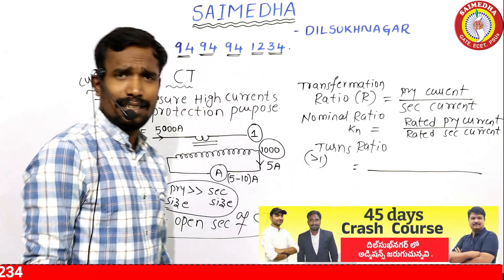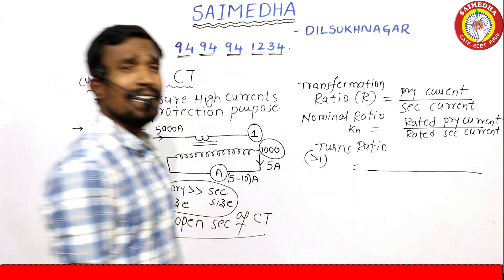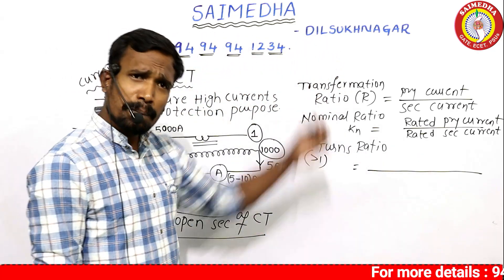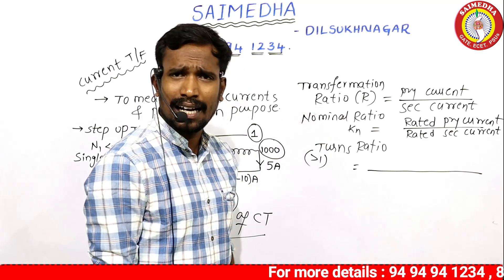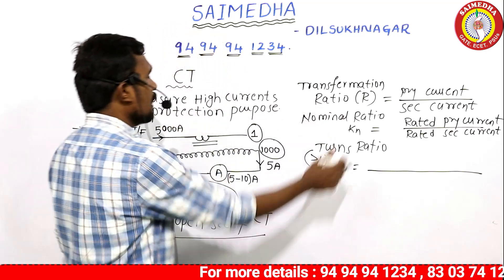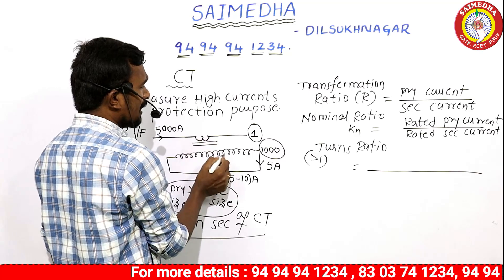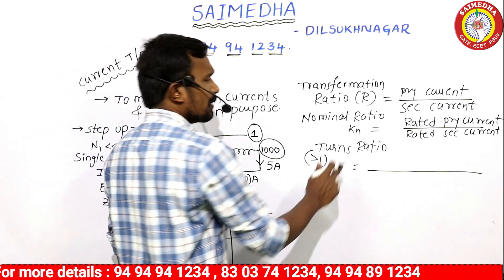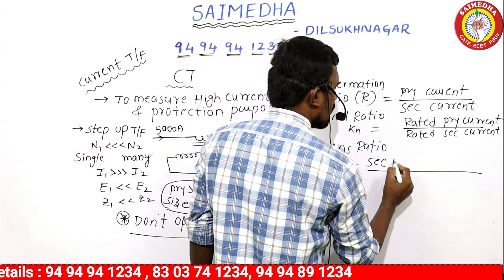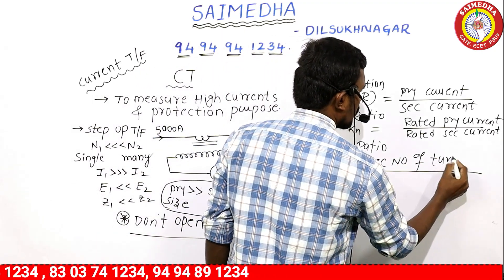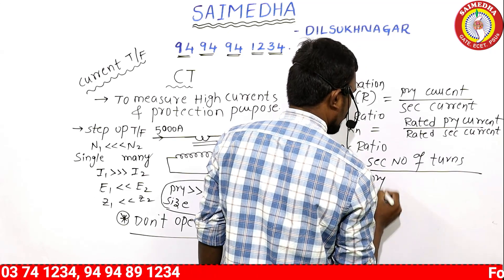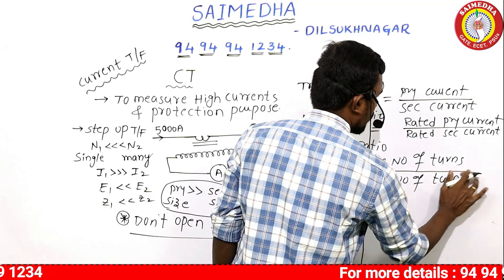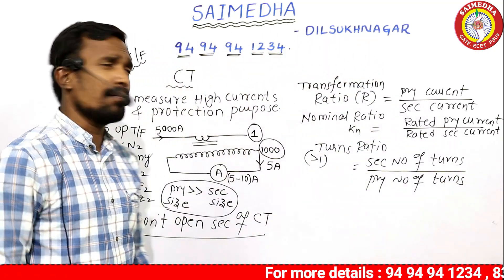Remember the turns ratio formula: the turns ratio is always greater than one — the value on top must be larger. The turns ratio of CT equals secondary number of turns divided by primary number of turns. These three ratios are very important.